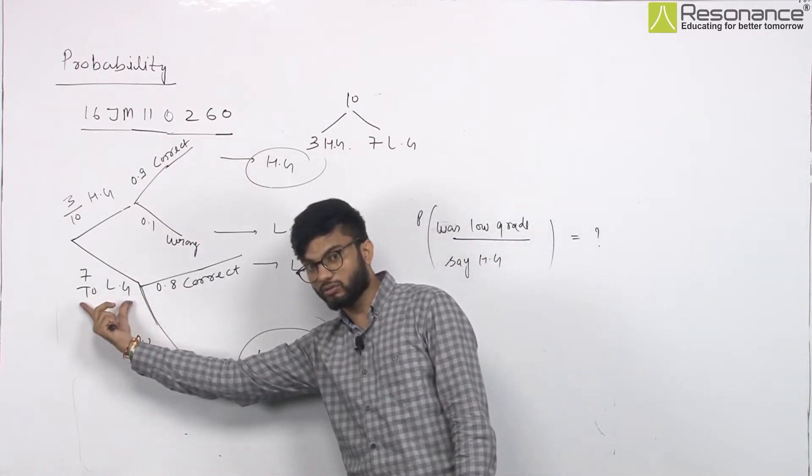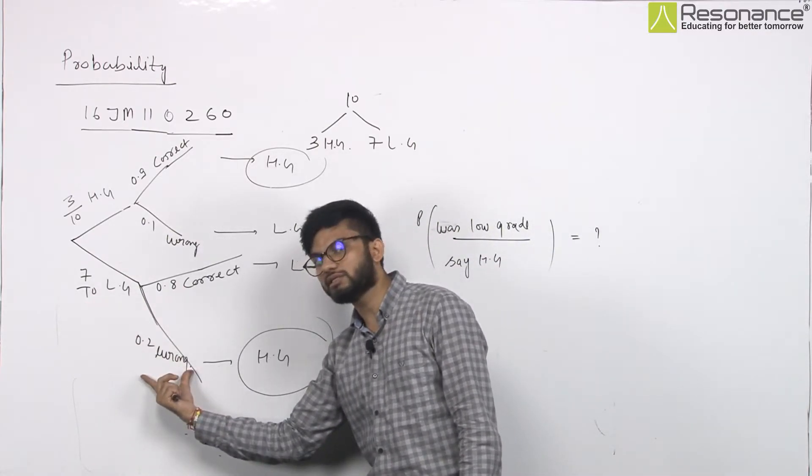What was the other one? You can tell the wrong point. However, there was low-grade. The wrong point is 0.2 probability.